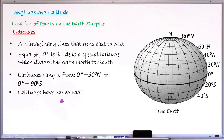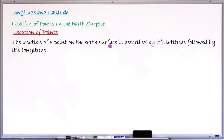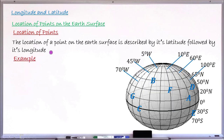Now that we have understood what longitude and latitude are, we can learn how to find locations or points on the earth's surface. The location of any point on the earth's surface is described by its latitude followed by its longitude. We write the latitude first, then followed by the longitude.